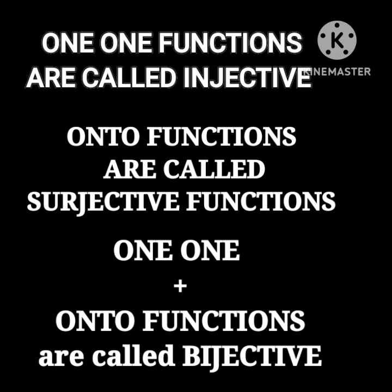One-one functions are called injective. Onto functions are called surjective. One-one plus onto functions are called bijective. So this is what I wanted to teach you today. Thank you.